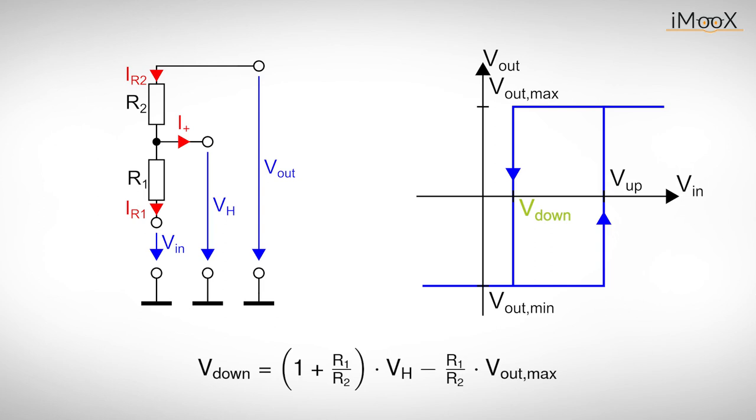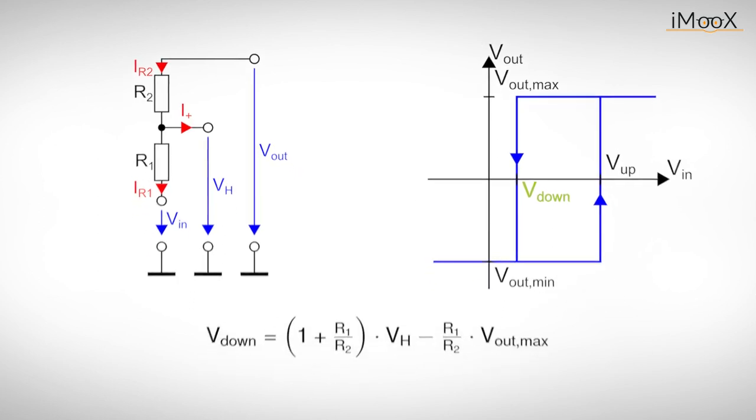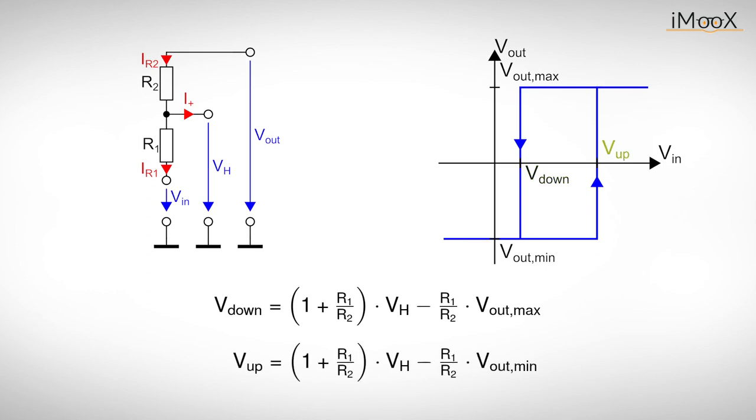A short cosmetic makeover results in the following equation. Now Vdown can be both positive and negative. The same is true for Vup, by the way, which can be calculated by the following equation.